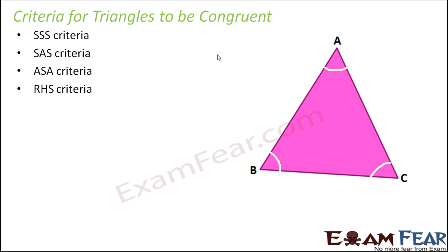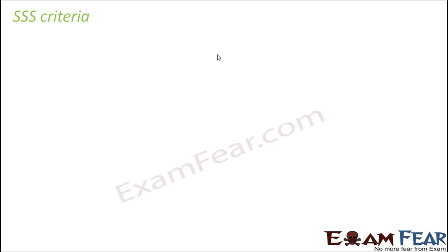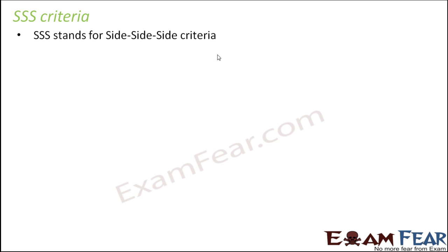So what are those criteria? SSS criteria, SAS criteria, ASA criteria, and RHS criteria. Let us try to understand them one after another. Let us start with SSS criteria — are you curious to know what SSS stands for? SSS stands for side, side, side criteria.